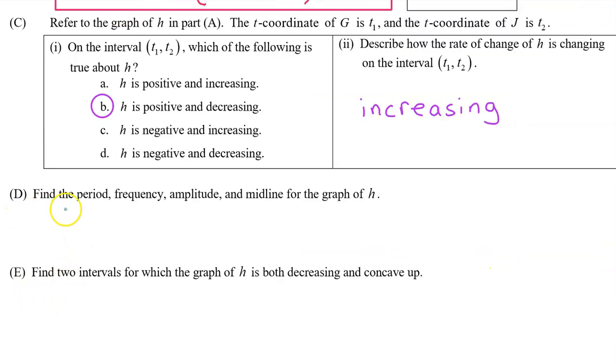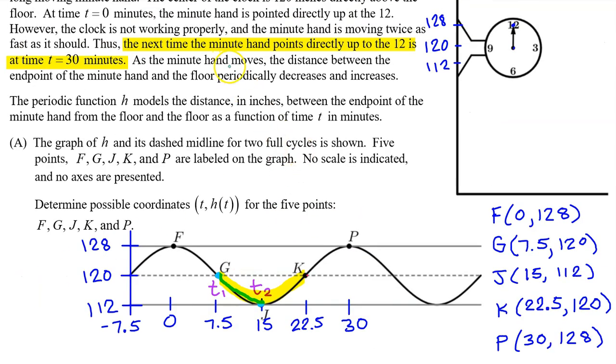Part D, find the period, frequency, amplitude, and midline for the graph of h. In the setup, we were told that the minute hand starts off pointing at the 12, and it takes 30 minutes to go all the way around and come back to pointing at the 12 again. So that's the period, 30 minutes.